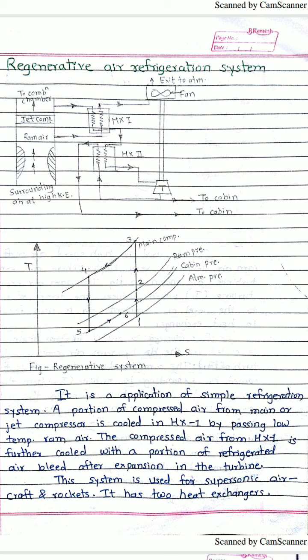This is what makes it regenerative: the expanded, cooled air is regenerated — used to cool the incoming compressed air in heat exchanger two. This is the essence of the regenerative air refrigeration system. A similar system is shown on the T-S diagram.